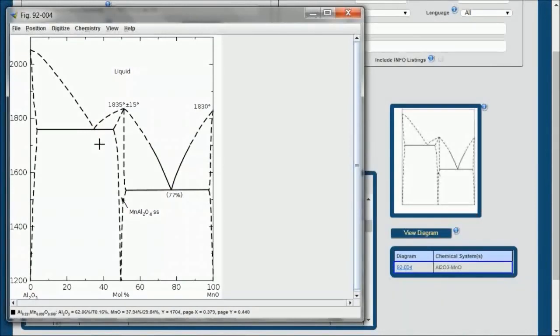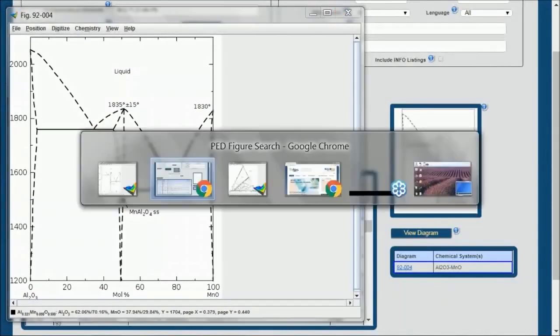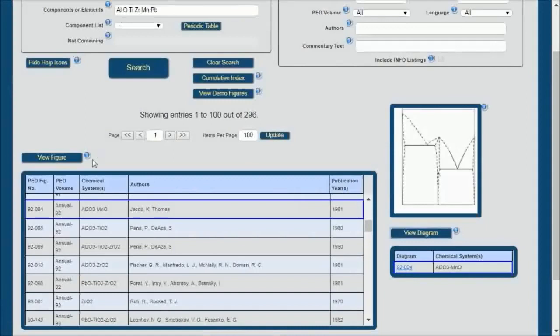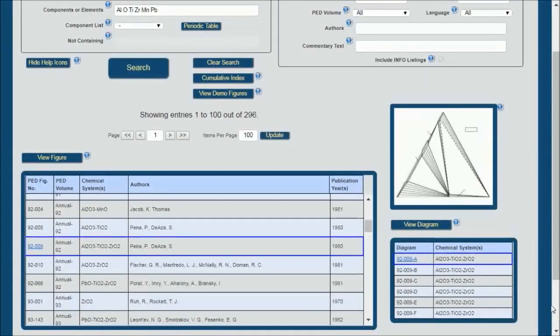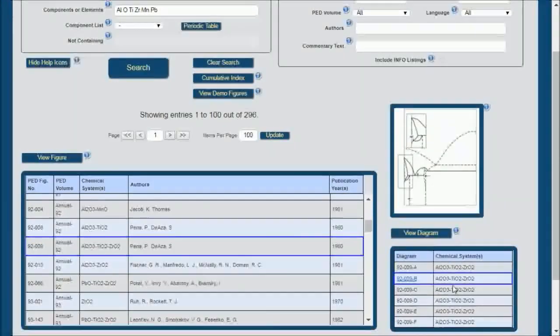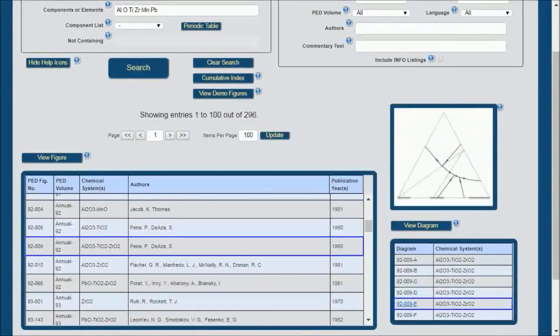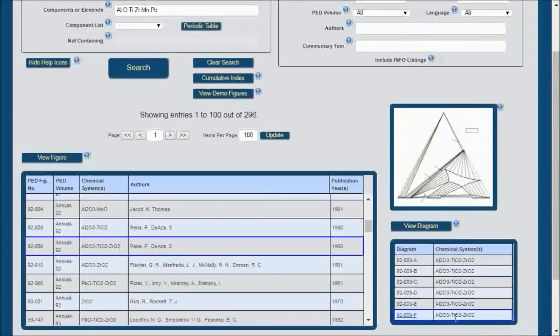Well, let's go on to our next example. When I move to the alumina, titania, zirconia system, you'll notice we don't have one phase diagram but we actually have six. And as I move through these six, you'll notice how the figure in the window changes. So you can see how that is quite useful.